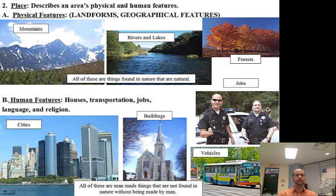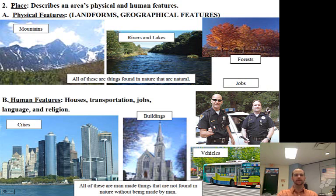Good afternoon. We are going to continue studying the geography of the United States. We've already covered the first theme of geography, which was location, and that has to do with latitude and longitude. Now we're going to talk about place.